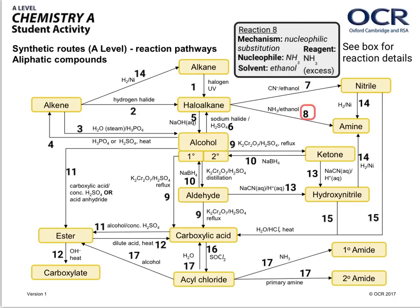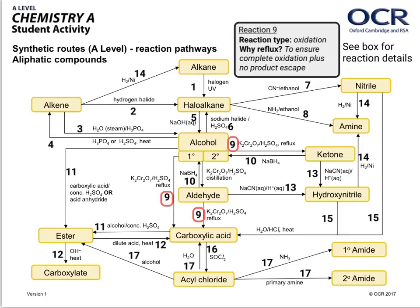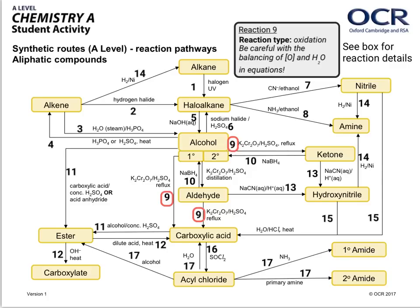Moving on to reaction eight — nucleophilic substitution again. This time ammonia is the nucleophile because of the lone pair on the nitrogen. The reagent is excess ammonia to ensure it goes all the way to an amine; without excess ammonia you'll only get an ammonium salt. Reaction nine is oxidation. We use reflux to ensure complete oxidation and no product escape. You've got to remember that two oxygen atoms are being used, with excess acidified potassium dichromate; H₂SO₄ is the preferred acid. Always be careful with the balancing of [O] and H₂O in equations for this reaction.